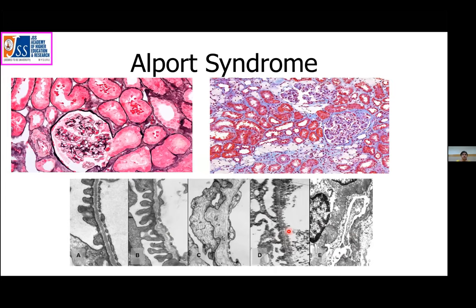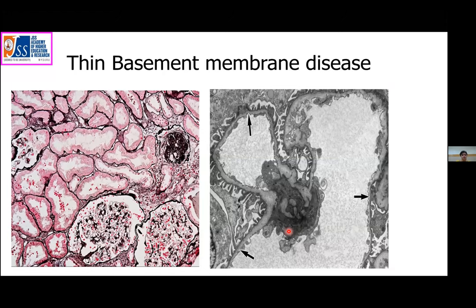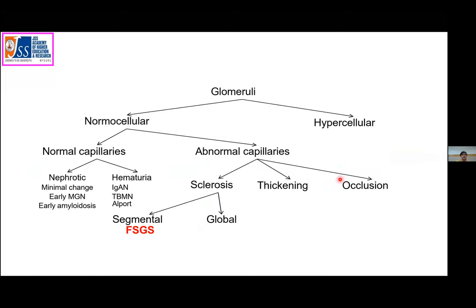Thin basement membrane disease, also called benign familial hematuria, presents with hematuria and normal-looking glomeruli on light microscopy and IF. It can only be diagnosed by electron microscopy, which shows thinning of the basement membrane. Normal thickness is around 300 to 350 nanometers; in thin basement membrane disease, it is less than 200 nanometers. This concludes the normocellular glomeruli with normal capillaries presenting with proteinuria and hematuria.